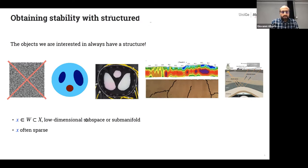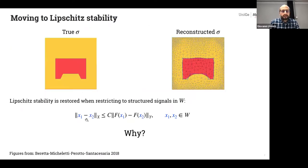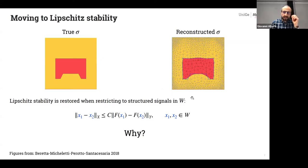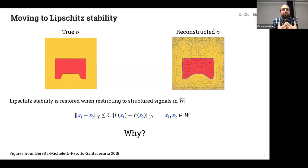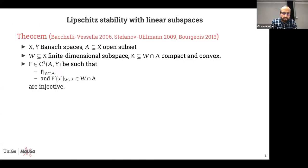Why does this help? In the Calderón problem, if you assume the unknown is a piecewise constant function, one is able to obtain a reconstruction that is much, much better than before. From the mathematical point of view, restricting to structured signals in the prior class W means that instead of having a log stability estimate, you actually have a Lipschitz stability estimate. The question is: why is this true? Is it always true that a suitable a priori assumption moves you from log-type to Lipschitz-type stability?